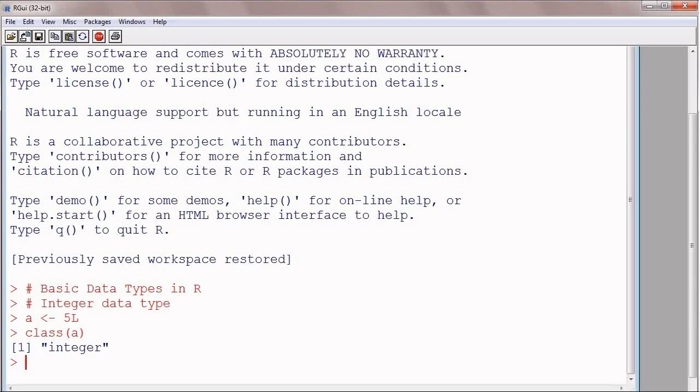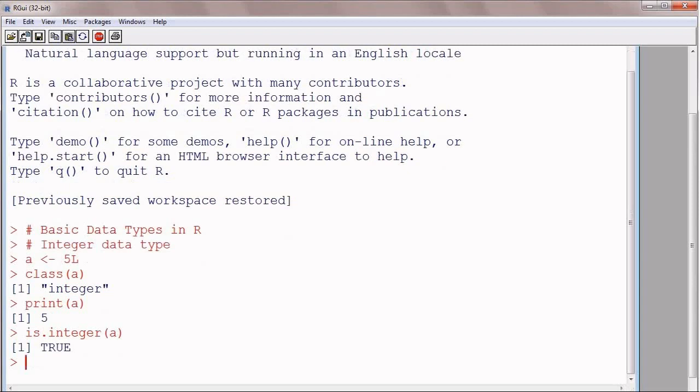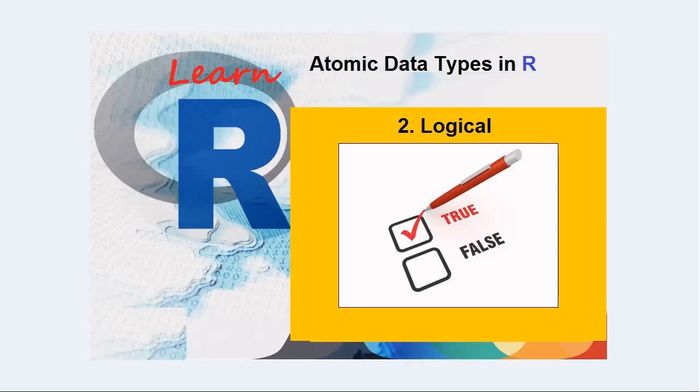So, A variable is an integer, and we can print this variable, print A, and it is 5 without L. We can check if a number is integer or not. We can write is.integer and give it the variable as an argument, and it will return true or false.